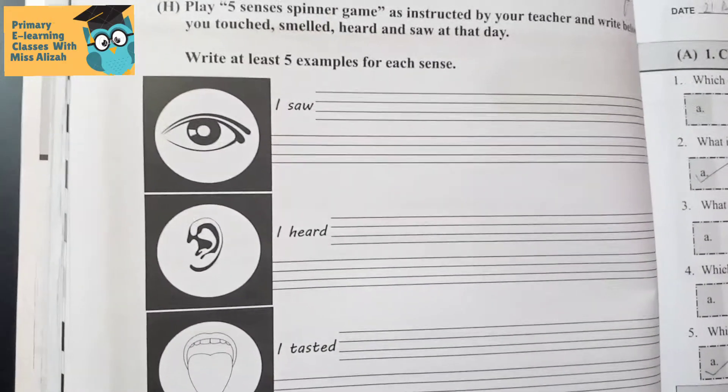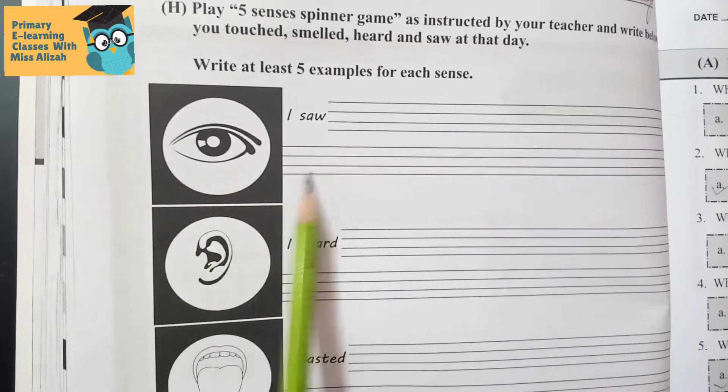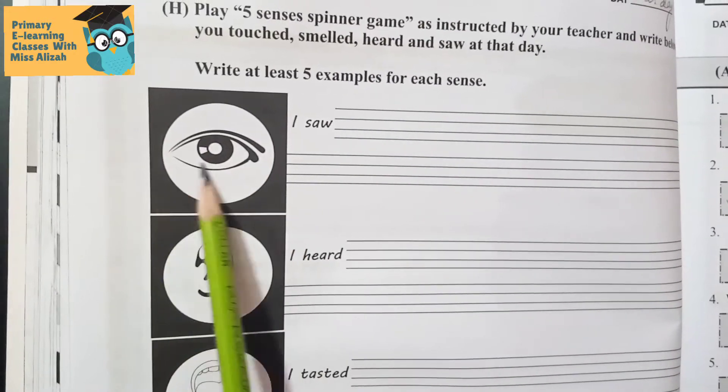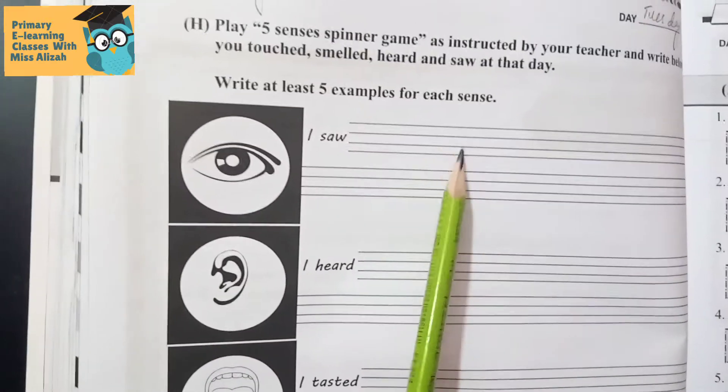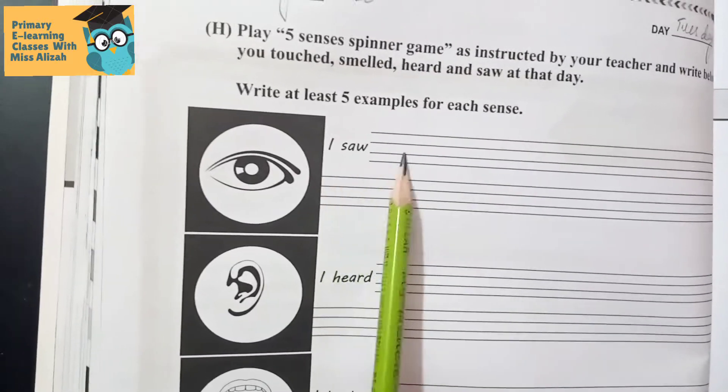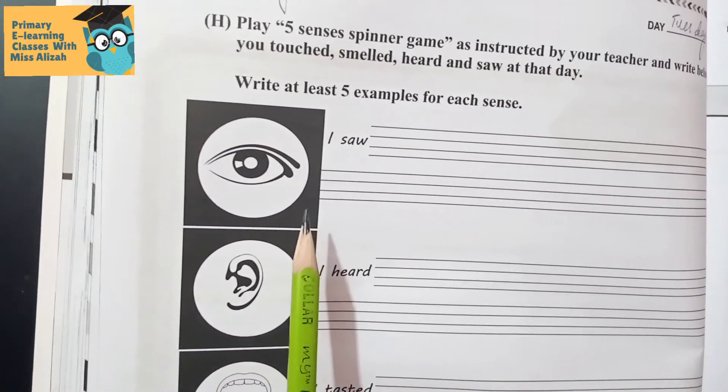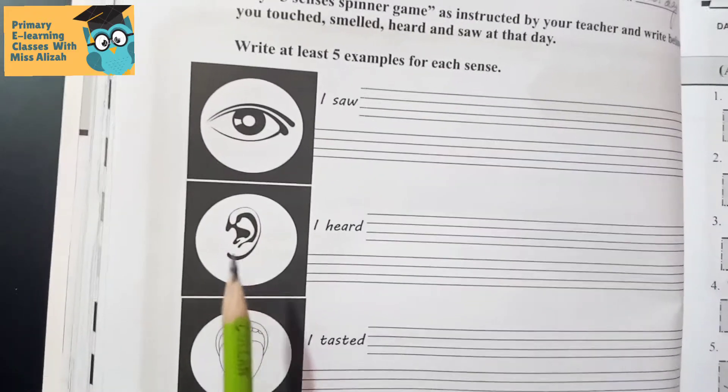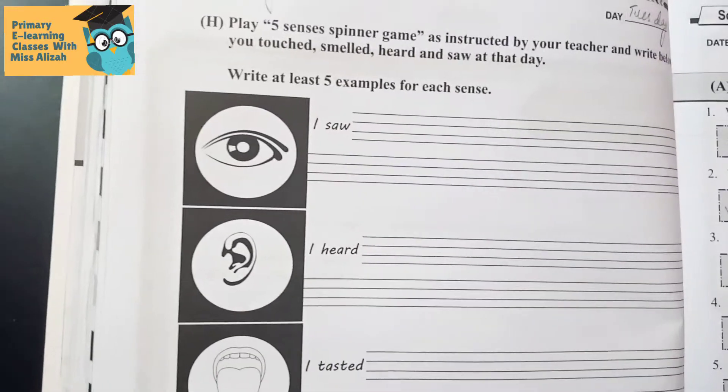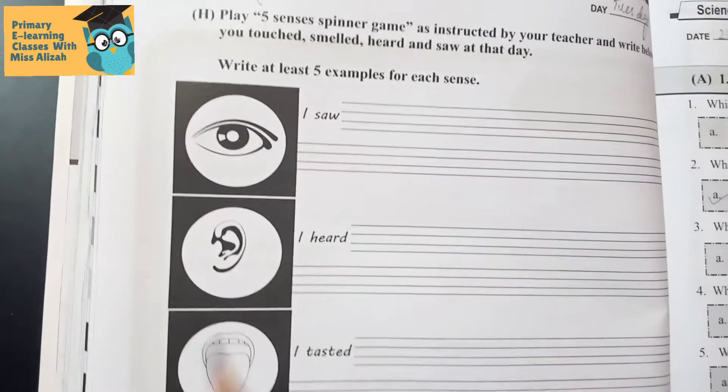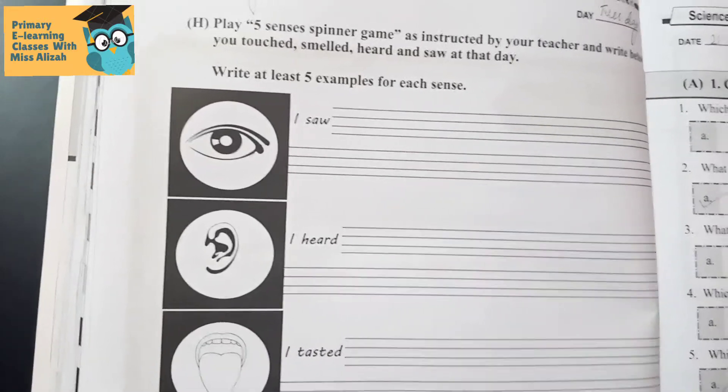You have to give five examples here. I saw - what did I see that day? Let's assume we have done this activity. I saw a bird chirping, I saw a baby crying. What did you hear that day? I heard an ambulance siren or I heard a musical instrument.